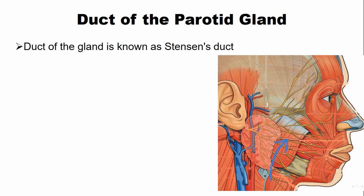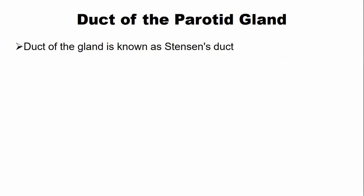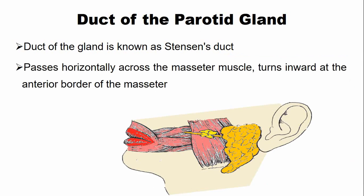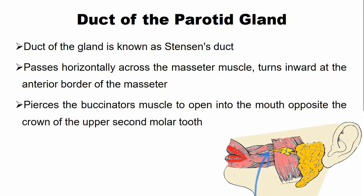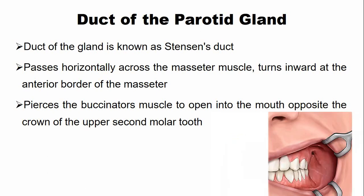The excretory duct of the parotid gland is also known as Stenson's duct. It appears at the anterior border of the gland, then passes horizontally across the masseter muscle, and then turns inward at the anterior border of the masseter. At the anterior border of the masseter, it pierces the buccinator muscle and opens into the oral cavity opposite the crown of the upper second molar tooth.